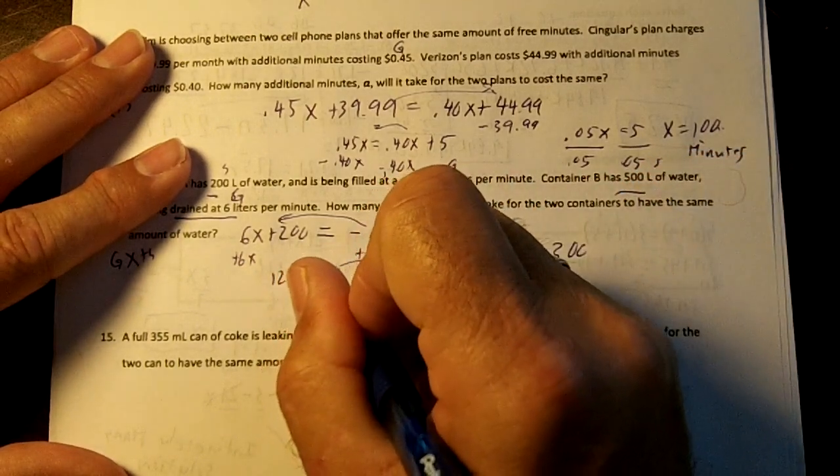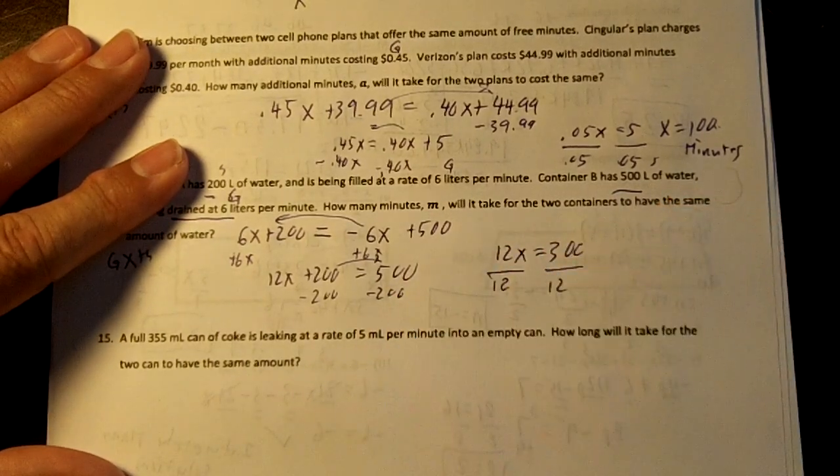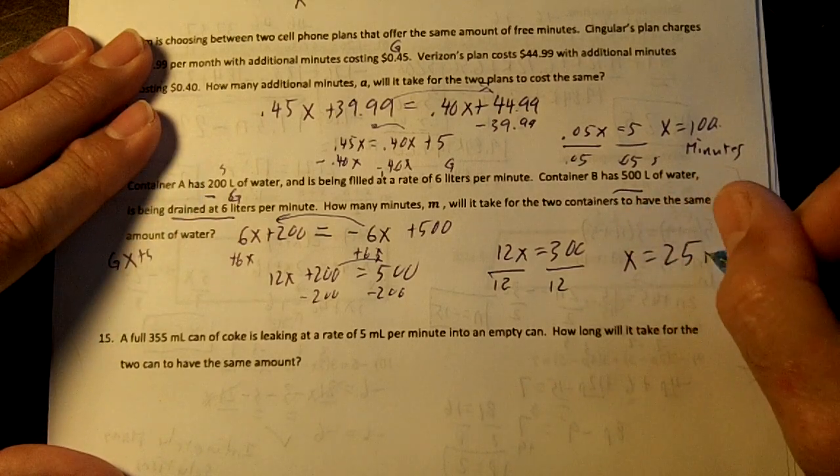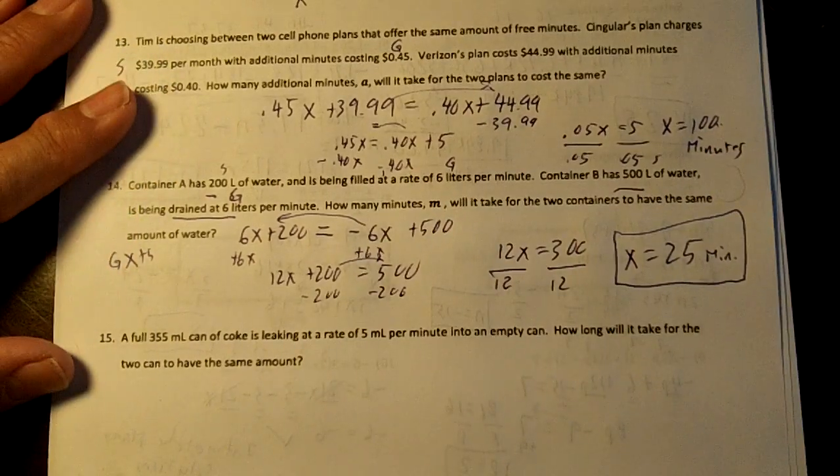Because 500 minus 200 is 300. Divide by 12. X is going to end up being 25 minutes. So at 25 minutes, the two buckets will have the same amount of water.